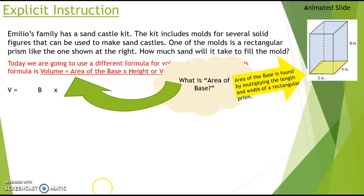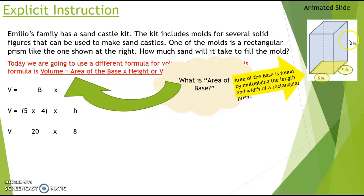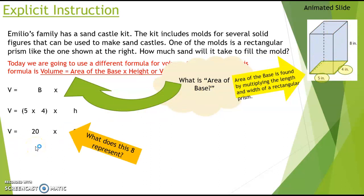When you do five times four, you're calculating the area of the yellow part inside the figure — five times four equals twenty — times whatever the height measurement is. The height tells you how many layers you have if you filled it with cubes. The height is eight, so we do twenty times eight. Twenty represents the area of the base, and the height is eight. Our answer is twenty times eight, which is one hundred and sixty cubic inches.